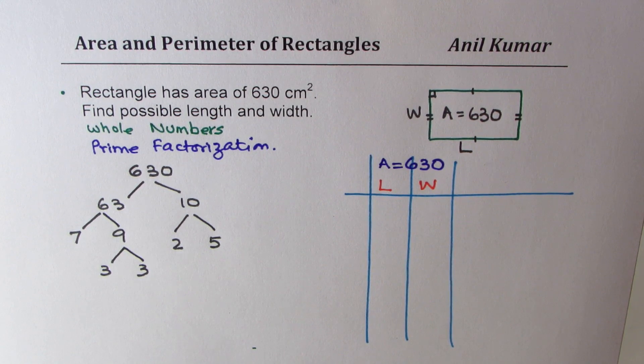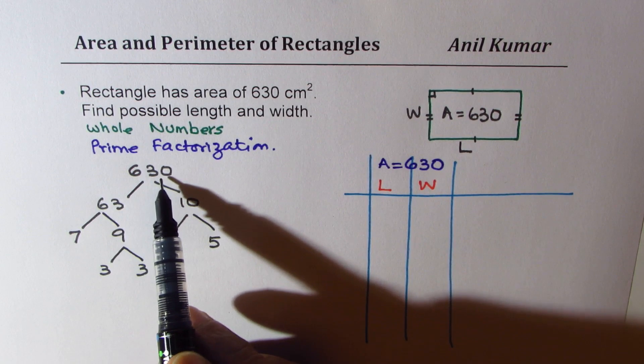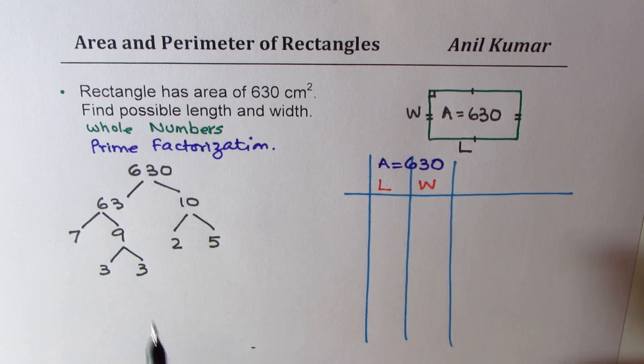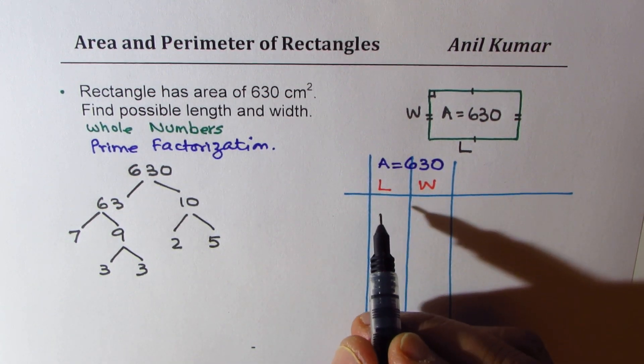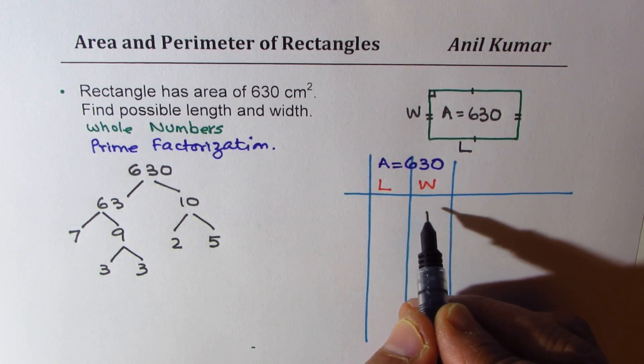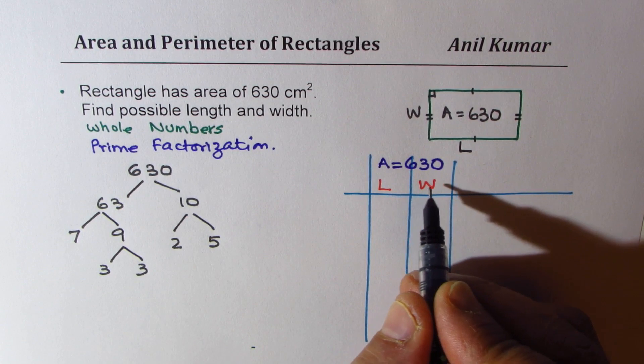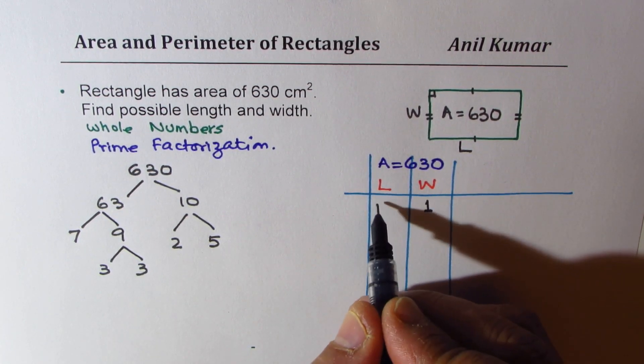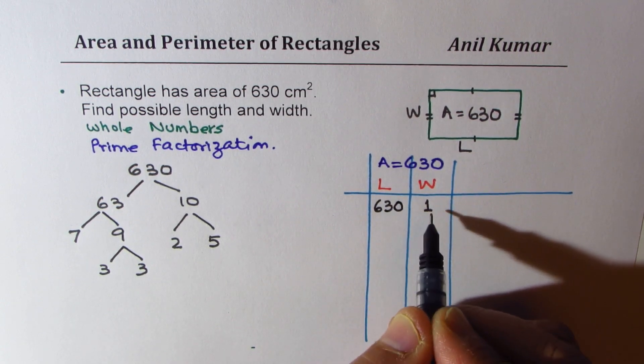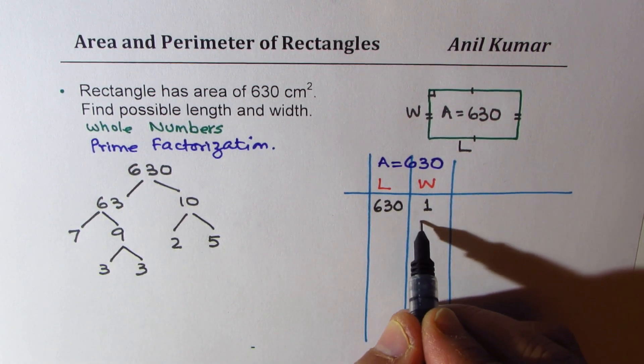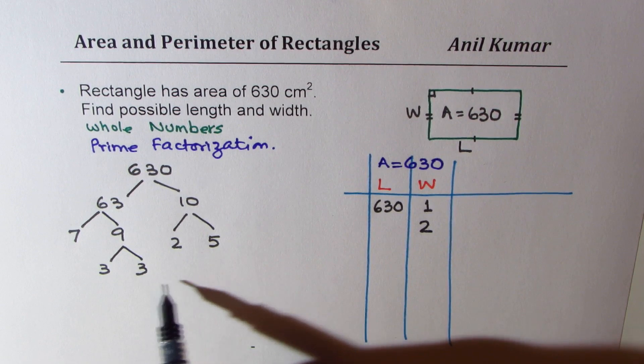So what you could do here is, and of course, 1 times 630 is always a number. So we could begin building our table. Let's say we want to write, we'll try to write smaller number for width. It doesn't make a difference, but it's good practice. So if I write width as equal to 1, in that case, I get length of 630. Well, 1 is not a prime number and therefore you don't see it here. Now, if I write width as 2, what is the other number?